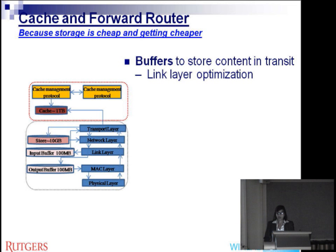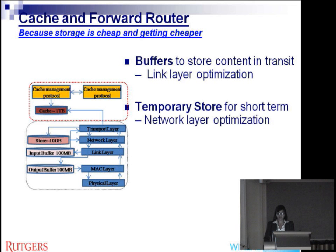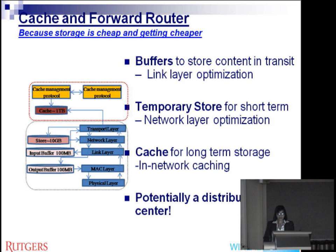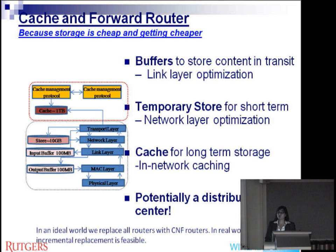Lots of storage means we can come up with protocols that use storage information for optimization for wireless and mobility as well as for content — large buffers for link layer optimizations, temporary storage for network layer, cache for network caching applications, and so on. This could actually be a distributed data center — you don't really need a big data center down in Arizona. In an ideal world, we could replace all the routers with CNF routers, which are cache and forward routers with storage capability. In the real world, we'll have to do an incremental deployment, and in the meanwhile, we could think about an overlay of cache and forward routers.